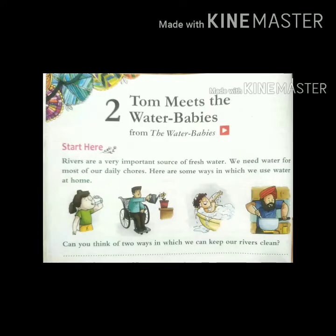Now let us start with the prerequisite knowledge. I want you all to look at the four pictures given under 'Start Here.' Put your finger as I read. Rivers are a very important source of fresh water, so which is the very important source of fresh water? Rivers. That is why we have to keep the rivers clean. Fresh water is the water which we can drink. Sea water and ocean water are salty and we cannot drink them. We need water for most of our daily chores. Here are some ways in which we use water at home.